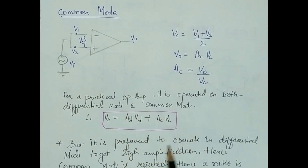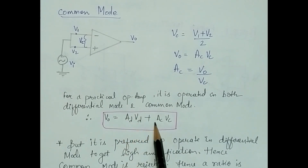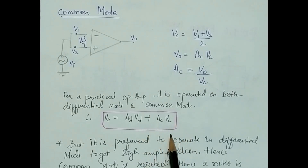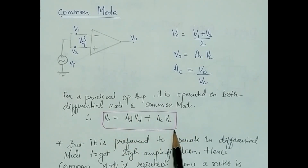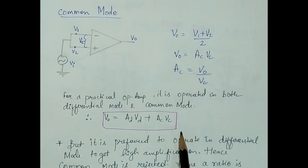What will be the overall output equation of the op-amp? V0 equals differential mode output plus common mode output, which is AD·VD plus AC·VC. But there is a problem — when the op-amp works in differential mode, there is the highest amplification rate, and hence the common mode should be rejected. We use a mathematical ratio called CMRR, or common mode rejection ratio, to reject the common mode operation.